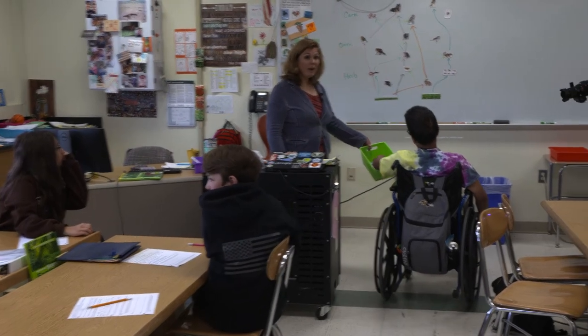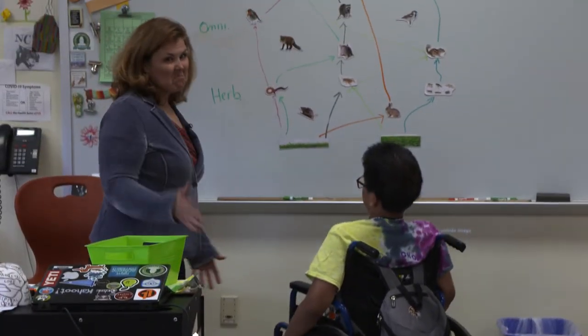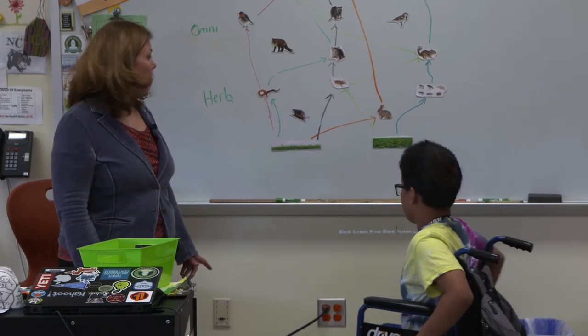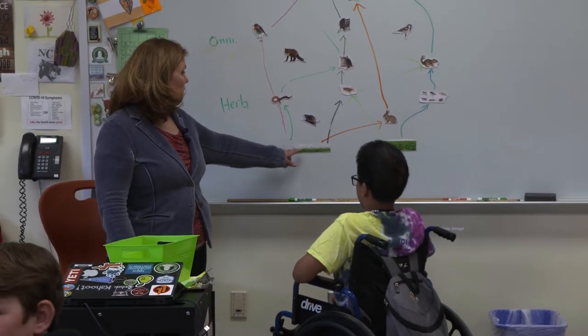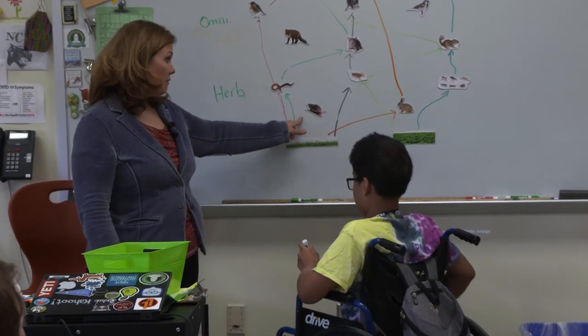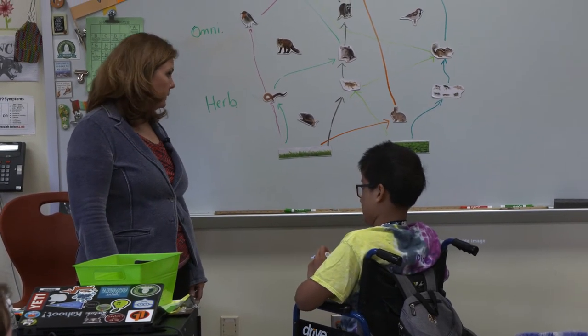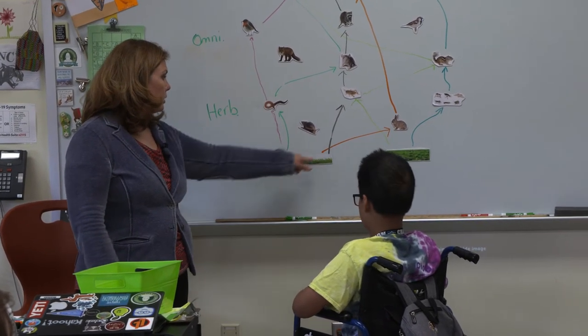We said animals could eat other predators and stuff. Food chains don't have to be long. Usually no more than like four or five. Let's start at the bottom. The snail is an herbivore, so if it's an herbivore, what does it eat? Does it eat plants or animals? It eats plants. Okay, so we're going to start with one of our plants.